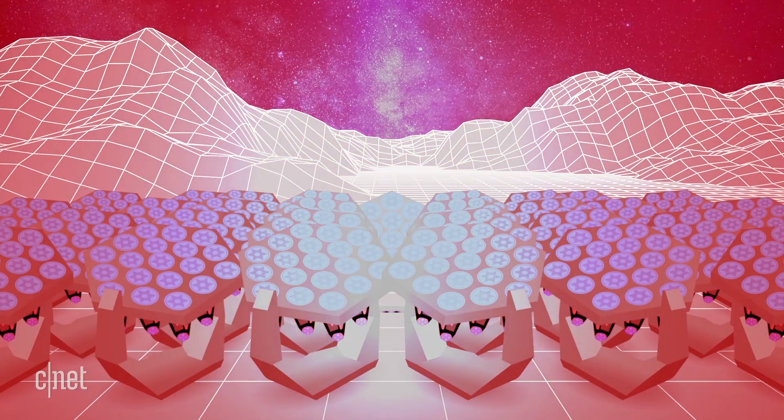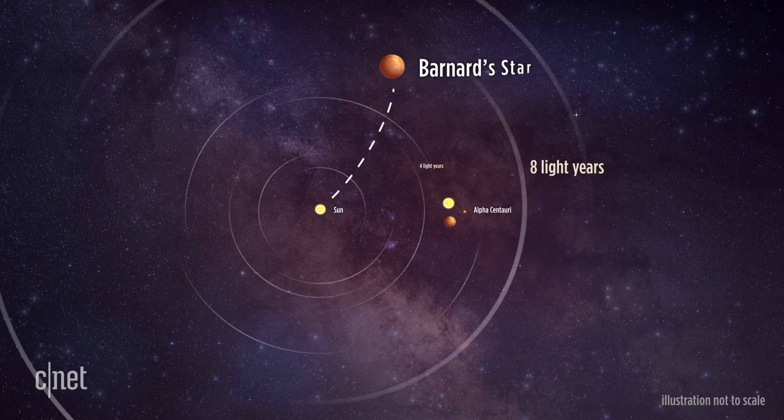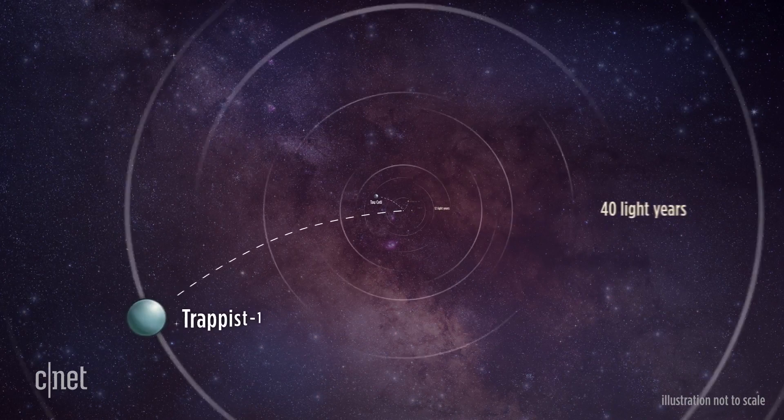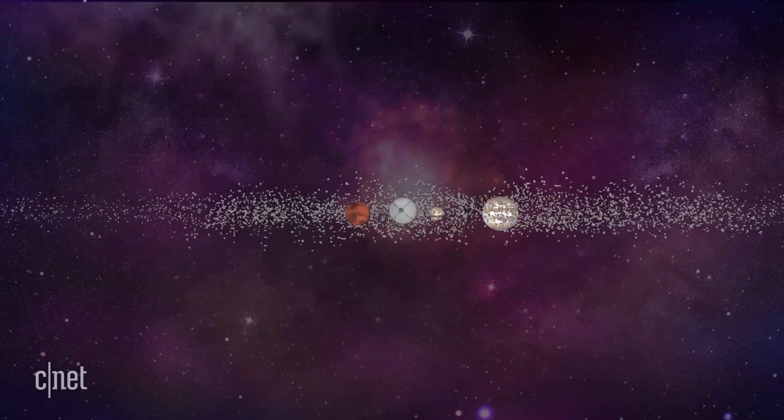Its job is done, but other nanocraft could follow in its footsteps to other nearby stars, like Bernard Star, Tau Ceti, and Trappist-1. It's not going to be easy, but it looks possible.